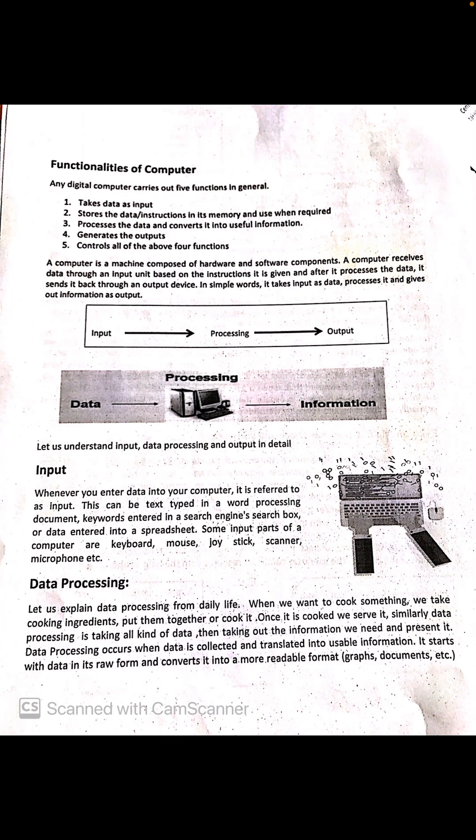Below you see: computer is a machine composed of hardware and software components. A computer receives data through an input unit. Based on the instruction it is given, after it processes the data, it sends it back through an output device. This is computer's basic fundamental phenomenon.